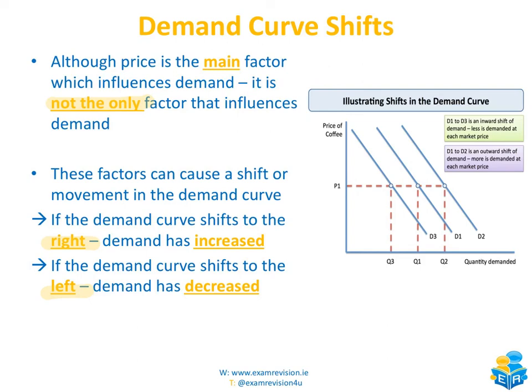From line D1 to D3, we call this an inward shift, and an inward shift of demand means that less is demanded at each market price. Whereas from D1 to D2, we call that an outward shift, meaning more is demanded at each price — something has happened in the market which makes more people want to buy it, and that factor is nothing to do with price. We'll speak more about this in a later video, but for now, understanding that external factors can have an influence on demand is enough.